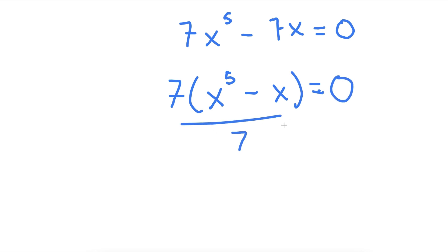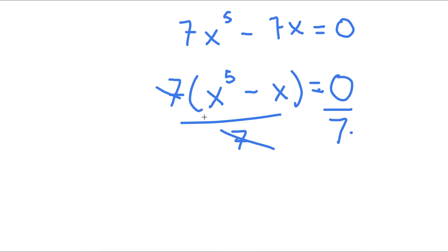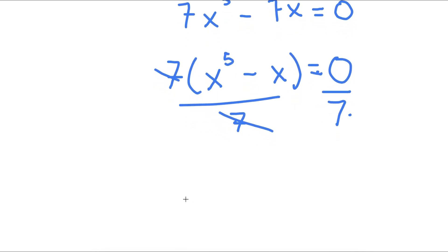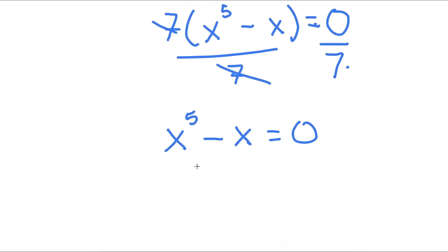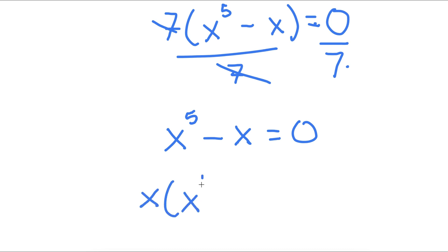Now I can go ahead and divide both sides by 7. These two cancel out, and now I'll be left with x to the power of 5 minus x is equal to 0. From here, I can go ahead and factor out x. So now I have x times x to the power of 4 minus 1 is equal to 0.